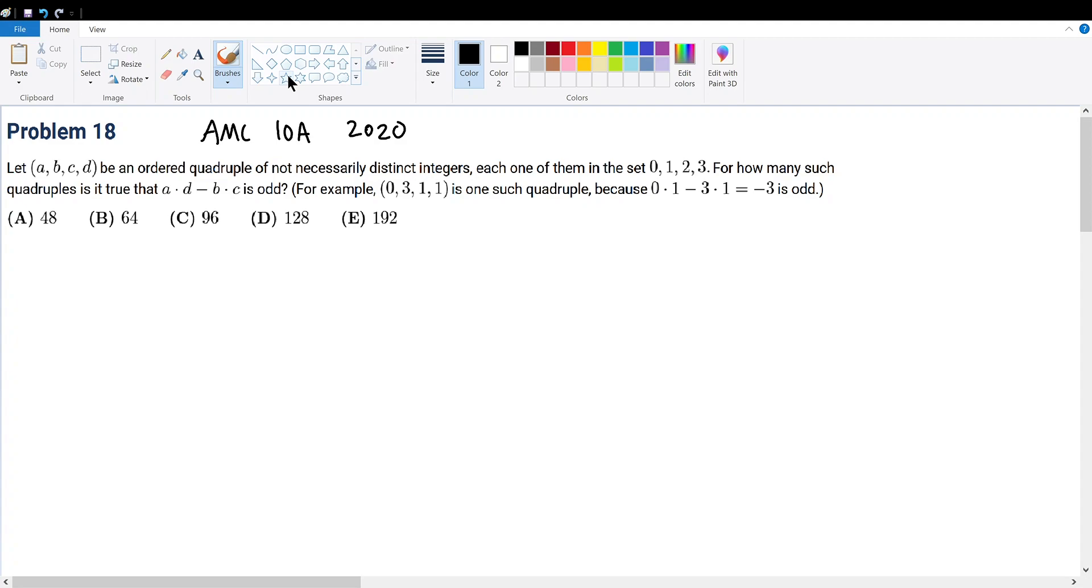AMC 10A 2020 problem 18. Let A, B, C, D be an ordered quadruple of not necessarily distinct integers. Each one of them is in the set 0, 1, 2, 3. For how many such quadruples is it true that AD minus BC is odd?